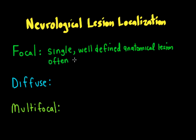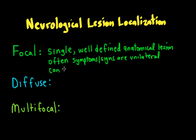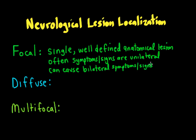Often, because they're single, well-defined anatomical lesions, the symptoms and signs are unilateral — either on the right or left. But you can have focal lesions that cause bilateral, symmetrical findings, and these would be seen with midline structure lesions that affect systems controlling both sides of the body.